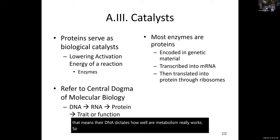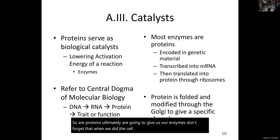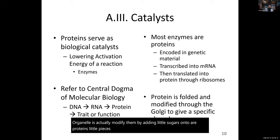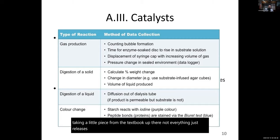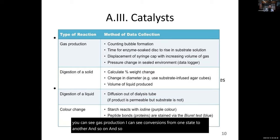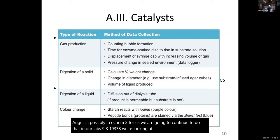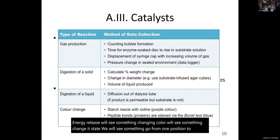Our proteins ultimately give us our enzymes. From the cell lecture, we talked about organelles that can modify them by adding little sugars — pieces of carbohydrates — to proteins to tag them and shift them to where they go. Not everything just releases flat-out energy; sometimes you'll see heat, gas production, or conversions from one state to another. In our labs 19 through 38, we look at these types of reactions — seeing color changes, state changes, something consuming a nutrient and making another product.